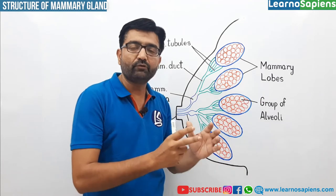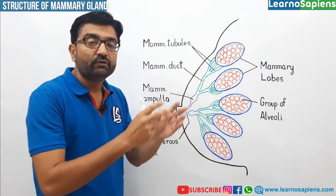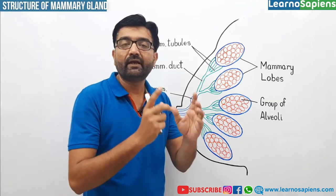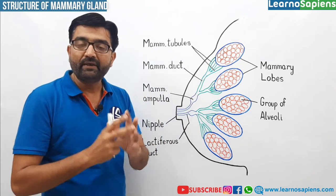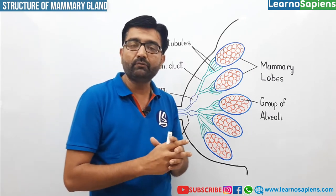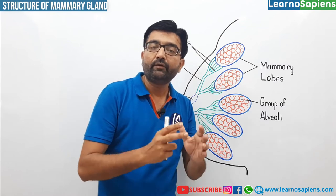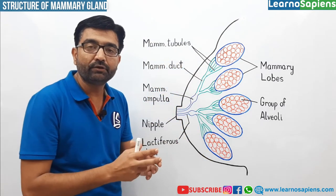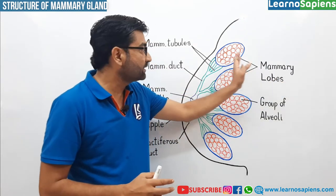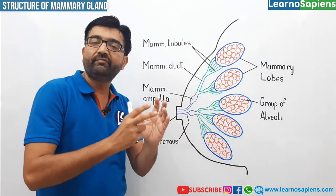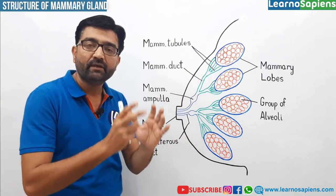Memory lobes — there are actually 15 to 20 memory lobes. These lobes are formed by glandular tissues. I have told you that there are 2 types of tissues in the memory gland: alveolar tissue which comprises fat, and glandular tissues. These glandular tissues form 15 to 20 memory lobes present inside each memory gland.